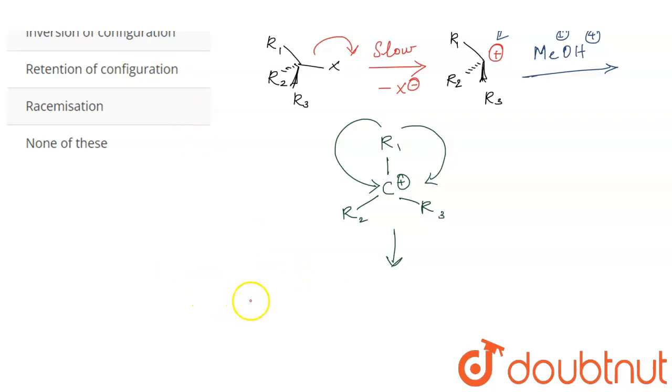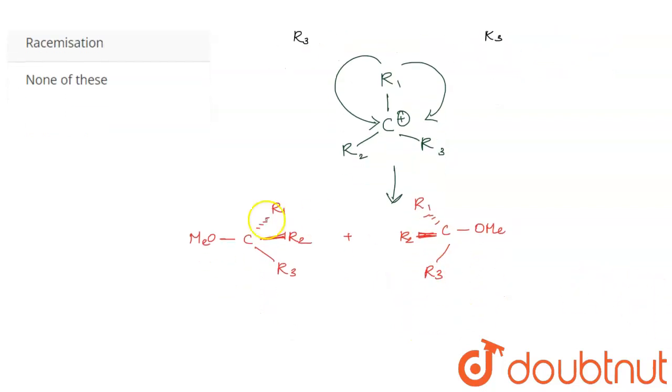So carbon - since it is an optically active center - and we are having OMe, plus we will be having R3.